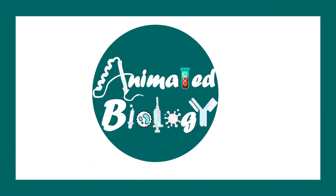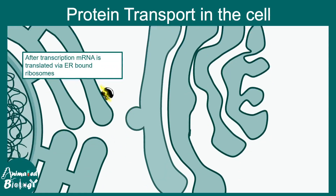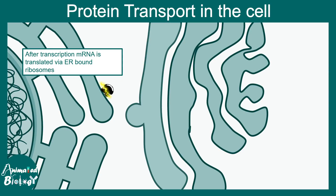We often say that proteins are trafficked through the anterograde pathway. They move from the endoplasmic reticulum to the Golgi, and then some proteins are secreted while others are displayed on the membrane. So how does that exactly happen, and how do we study that?